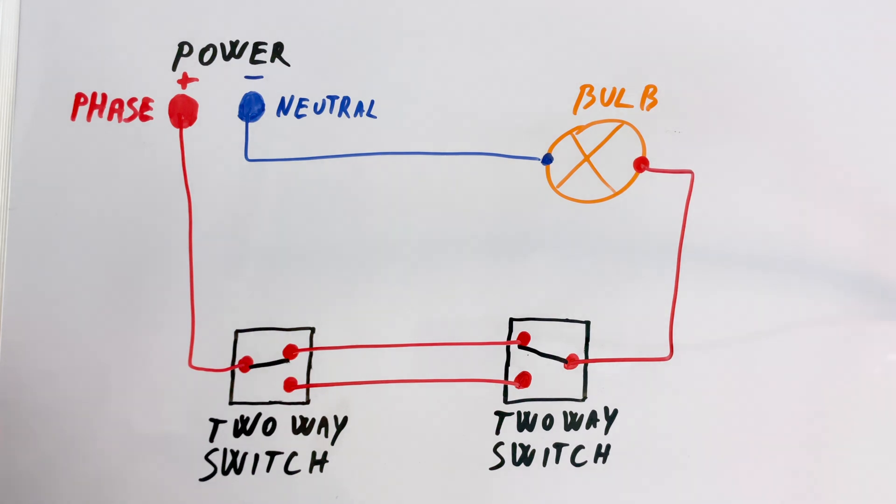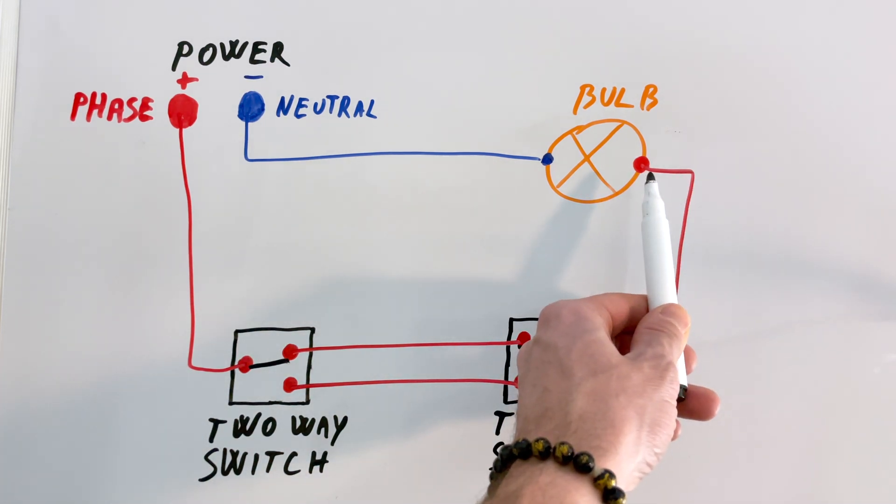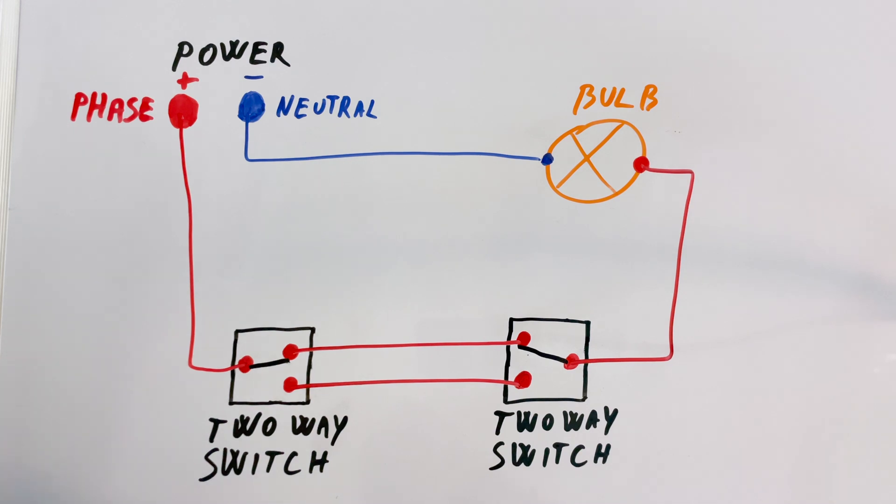This is a simple diagram, but let's understand how it works. The phase wire reaches the common terminal of the first switch. The two switches are connected in between, and from the common terminal of the second switch, we go to the bulb. Right now, the bulb is on because the circuit is closed.